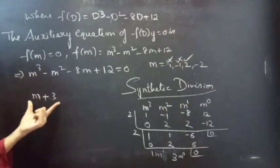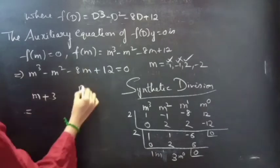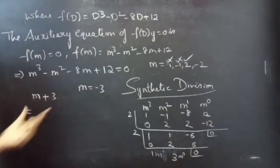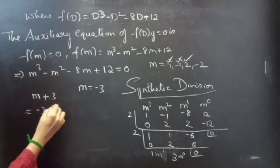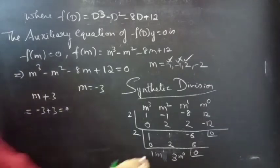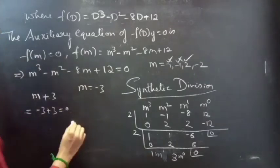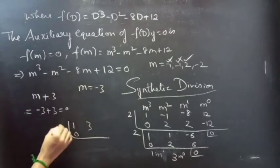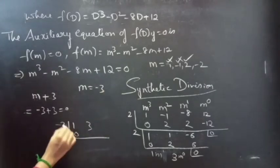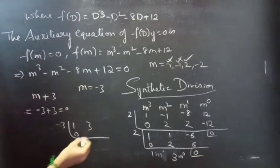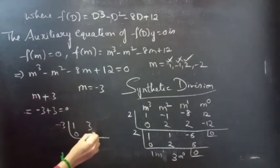By this we can say that for m equals to minus 3, this polynomial gets satisfied and equals to 0. So for m equals to minus 3: 1 plus 0 is 1; minus 3 into 1 is minus 3; and we get 0.